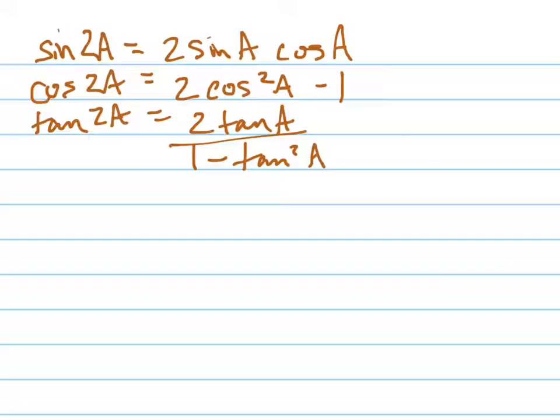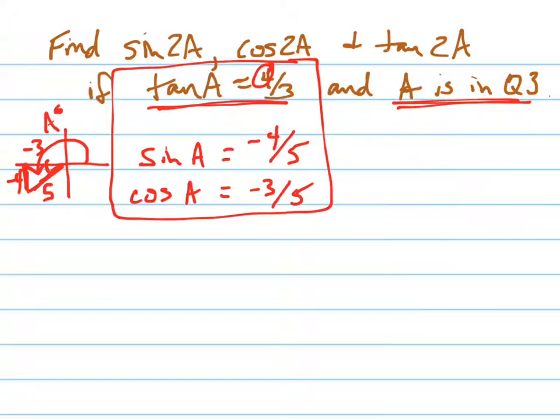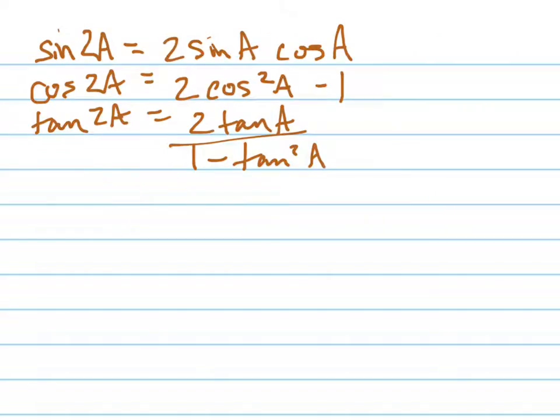So the sine of 2A, remember the sine was negative 4/5, so this is negative 4/5, and the cosine is negative 3/5. And so this equals 2 times negative 4/5 times negative 3/5, which equals...